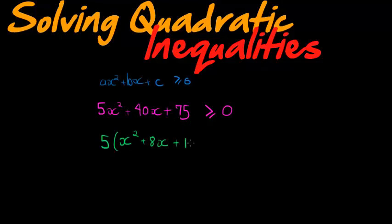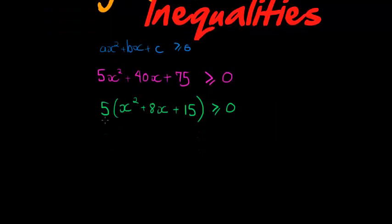75 divided by 5 is 15. This is greater or equal to zero. So now what I like to do is I'll just cancel the 5 on both sides by dividing it away. So x squared plus 8x plus 15 is greater or equal to zero.